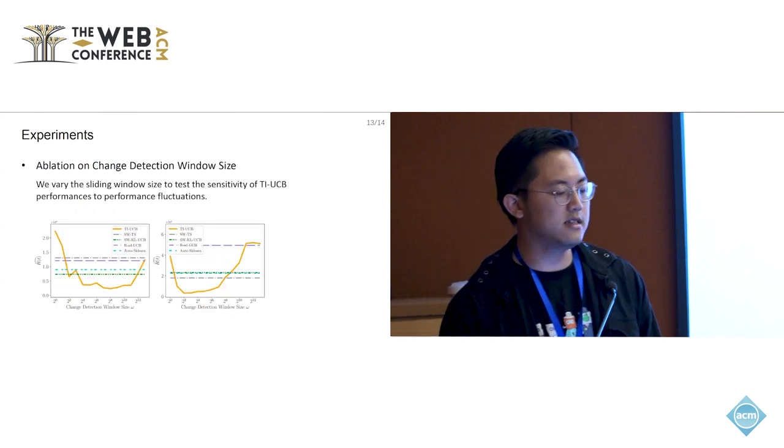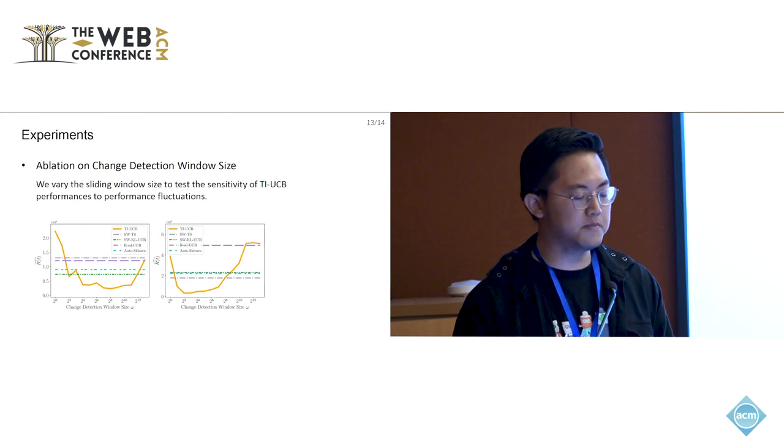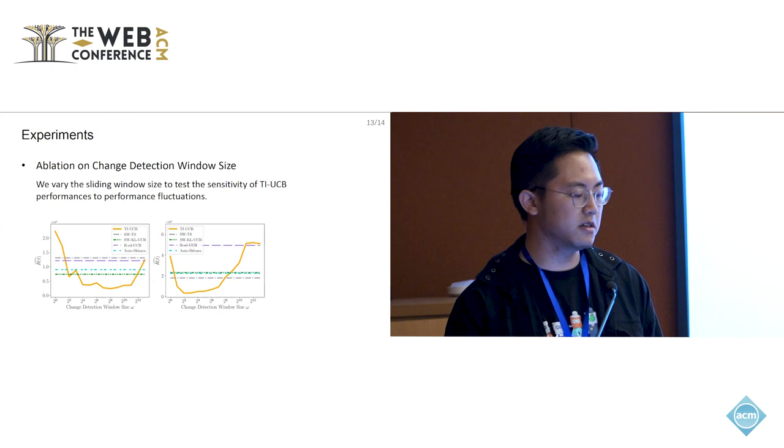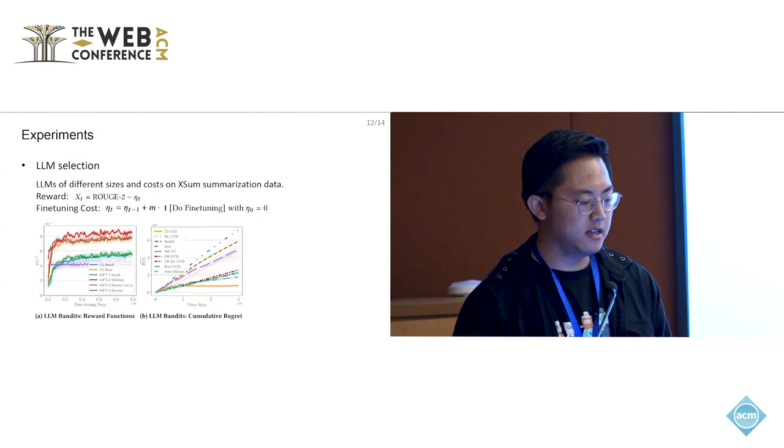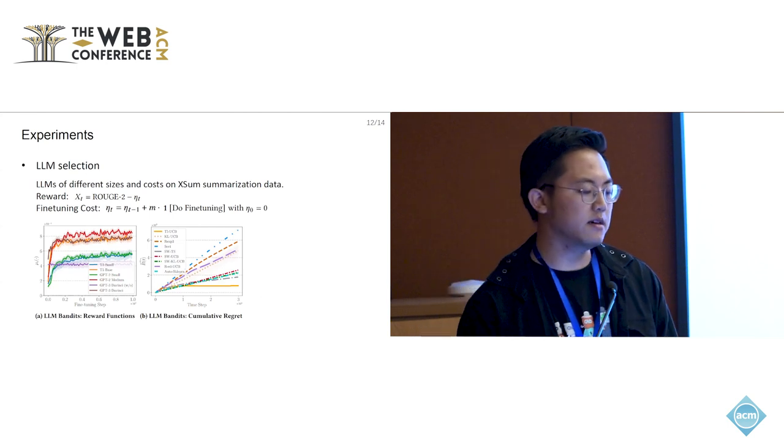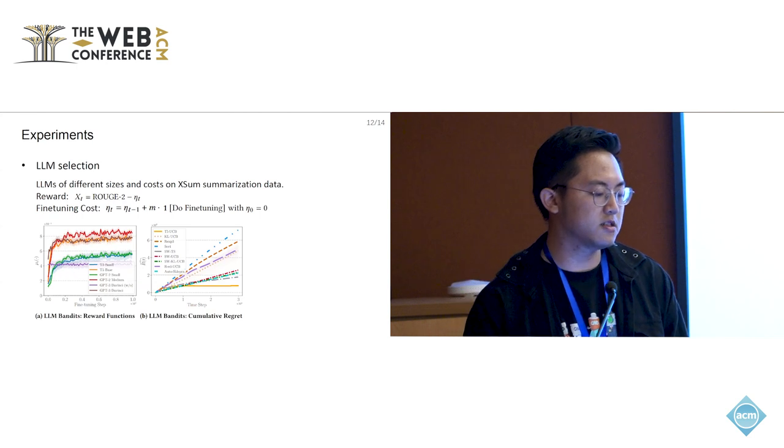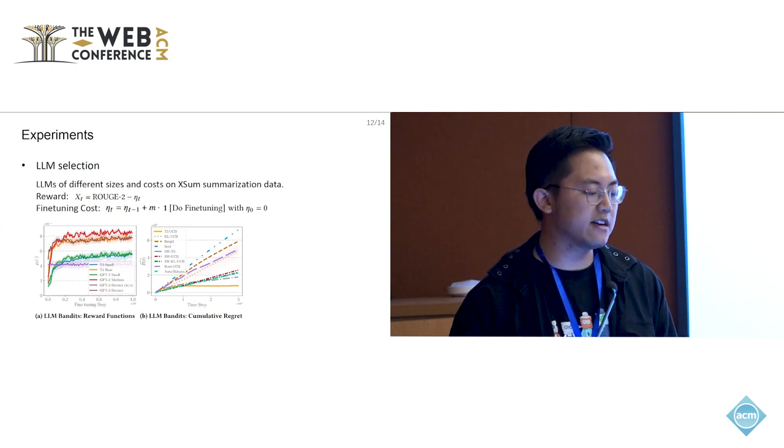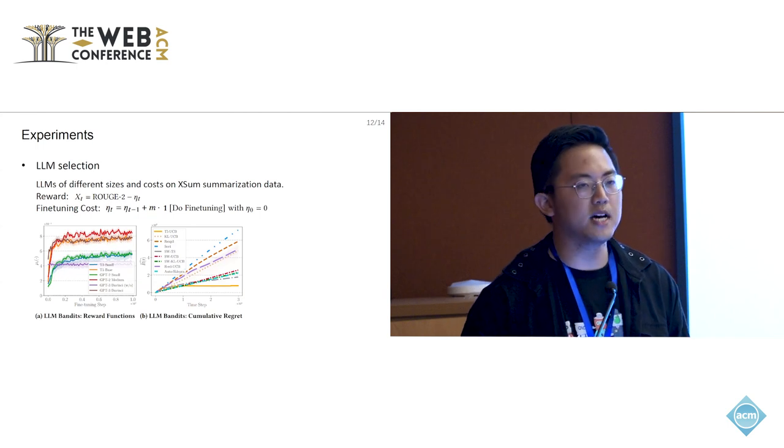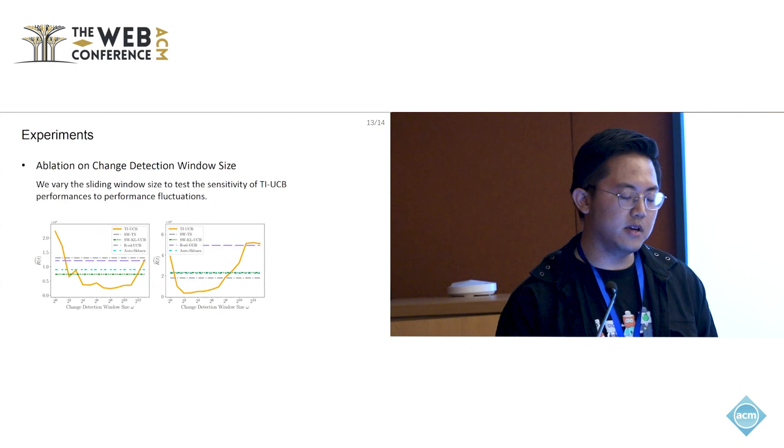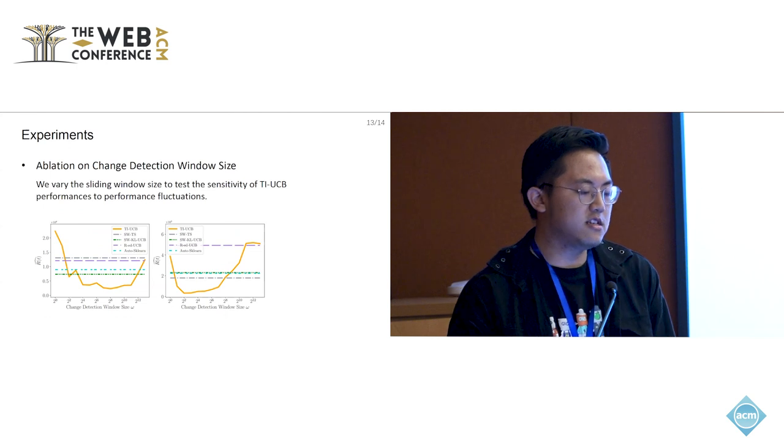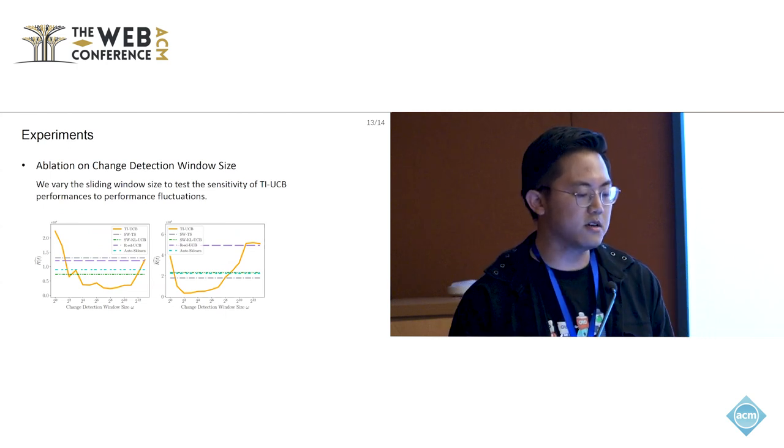We also do an evaluation study on the change detection window size. As we can observe in these two figures, when the change detection window size is too small, the algorithm performs not so good, which is essentially because in real datasets, the model performance trend is not strictly increasing and there's many fluctuations, up and downs, as you can see in the figure. When the change detection window size is too small, it cannot accurately predict the model performance trends but is mistaken by those fluctuations. We can also see that when the change detection size is too large, which is intuitively easy to understand because when it is larger than the horizon of the training steps, the change detection mechanism is not even triggered. This also shows the necessity of a change detection method.